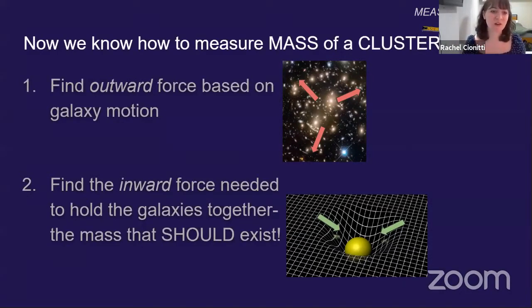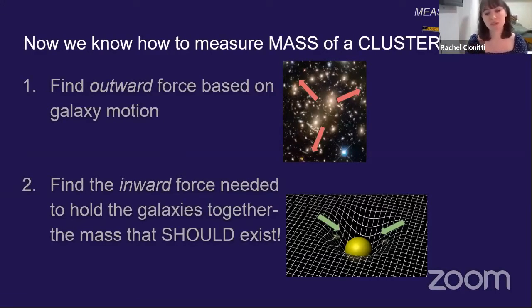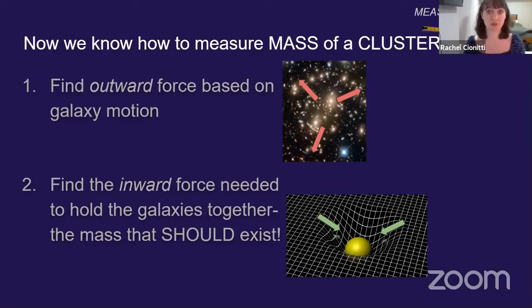So we find the outward force based on the galaxy motion — we can do that. And then we assume the inward force using physics principles. So this is more of a physical method than an observational method, even though we use astronomical observation in the first step.